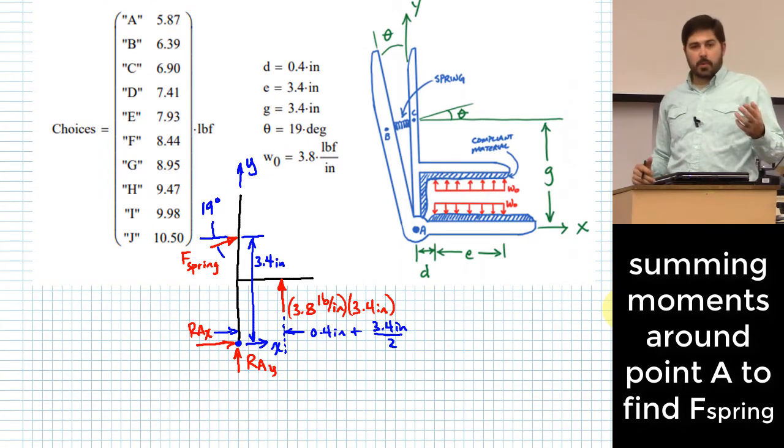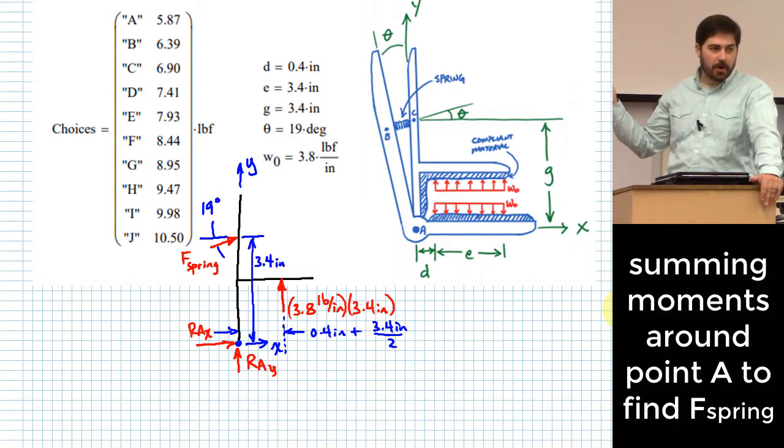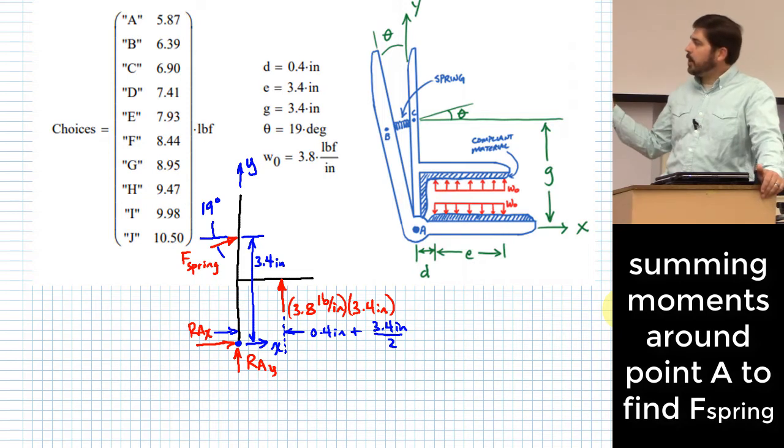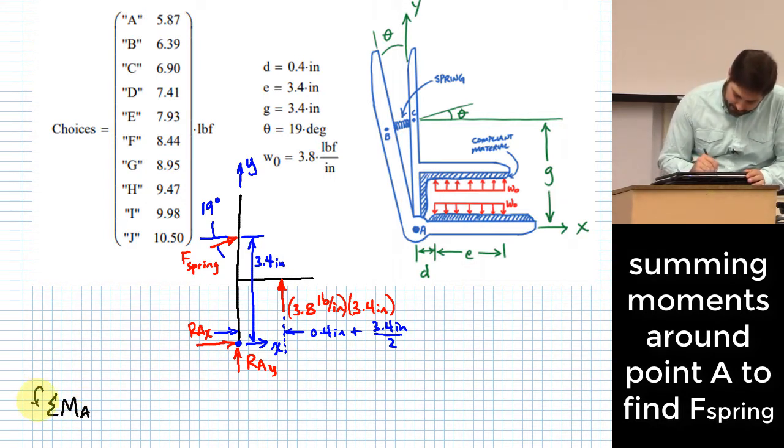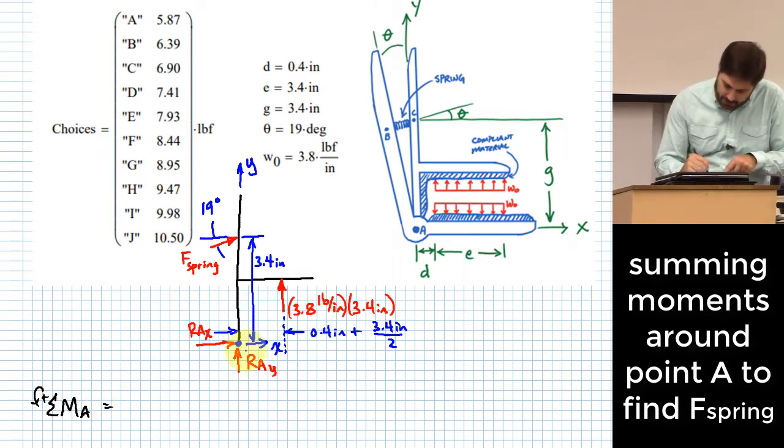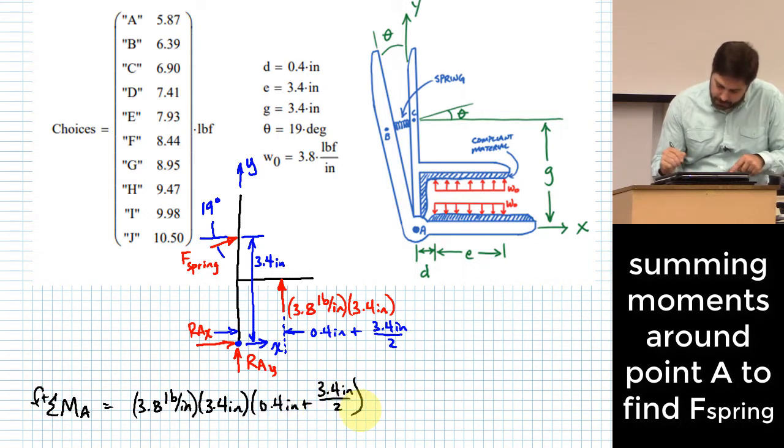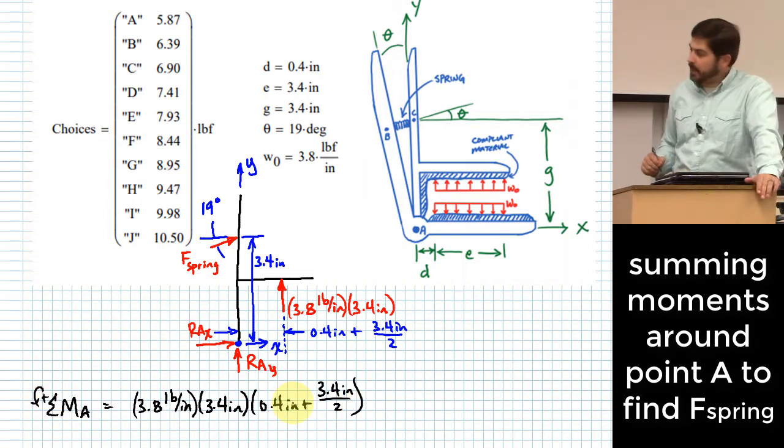Okay, you can do equilibrium equations, but we want to be smart about our equilibrium equations. We don't care about finding R-A-X and R-A-Y. Those are not part of what we are tasked with doing. So if we can do something that will get rid of R-A-X and R-A-Y, that might be smart to do so that we don't have to deal with them. So what's a technique of getting rid of R-A-X and R-A-Y in an equilibrium equation? Sum moments around that point. So summing moments around point A, I'll take 3.8 pounds per inch multiplied by 3.4 inches and multiply this by 0.4 inch plus 3.4 inches over 2. That is going to all be in the counterclockwise direction around point A, which I'm taking that to be positive, so I'm going to leave all that as positive values there.